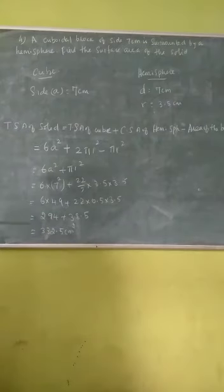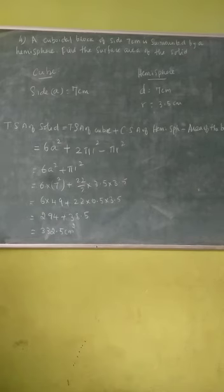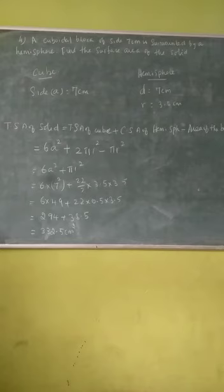So what is the answer? 294 plus 38.5. So if you are adding these two numbers we have 332.5 cm². That is, the total surface area of the solid is equal to 332.5 cm².